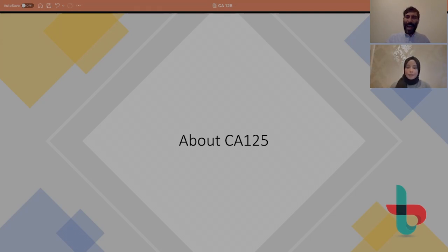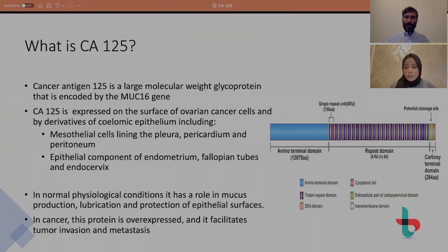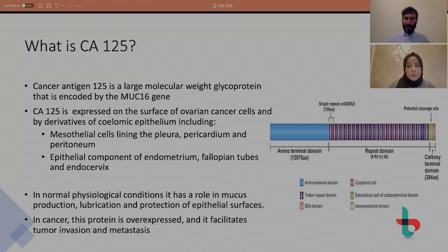So what is CA125? CA125 is a protein - it's an epitope on a much larger protein called MUC16. MUC16 is a mucin which is expressed by normal epithelial cells that are derivatives of the coelomic epithelium. In normal physiological conditions, CA125 or MUC16 is expressed in the pleura, the pericardium, the peritoneum, as well as in some normal epithelia of the endometrium, fallopian tubes, and the endocervix.